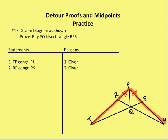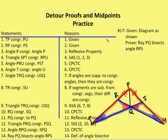We're given the diagram as shown. I have RP congruent to PS, and also TP congruent to PU — those are the two givens. TP congruent to PU is indicated by the red highlighted line, and RP congruent to PS is indicated by the two hash marks.